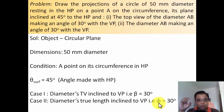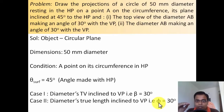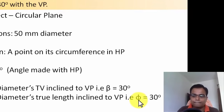I've divided the solution into two different phases. In phase one, I'll give a demonstration of how the object is kept with respect to the HP and VP — what our initial assumption shall be, whether we slam it on the HP or the VP. In phase two, it's all about drawing the orthographic projections of the two cases.